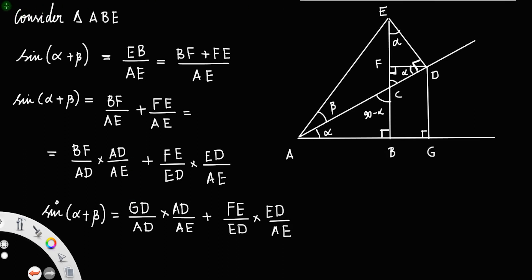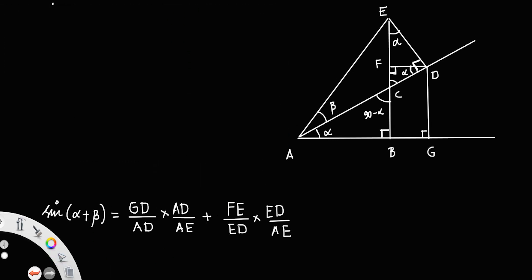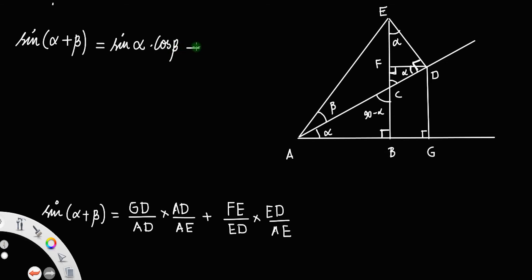So sine of alpha plus beta equals: now let us look at the ratio GD by AD. If you consider this triangle, GD by AD is actually sin alpha. Into — what about AD by AE? If you consider triangle ADE, then AD by AE is the ratio cos beta.